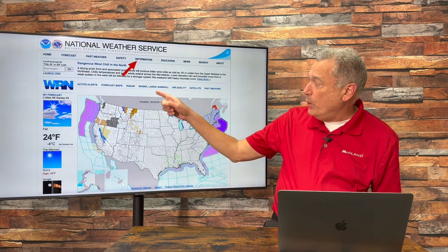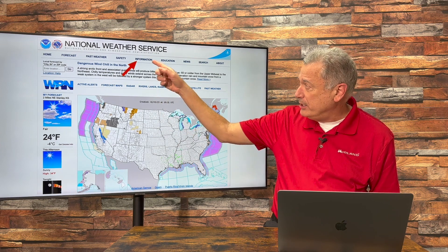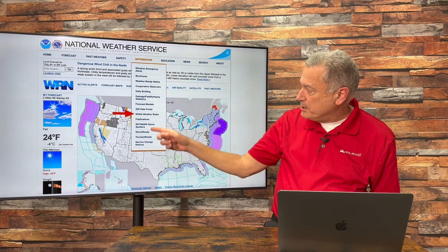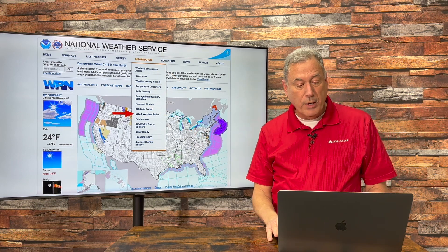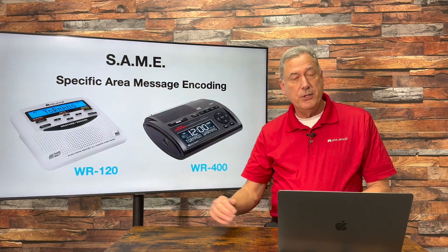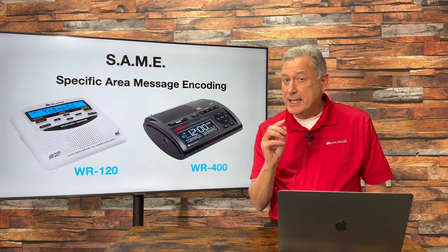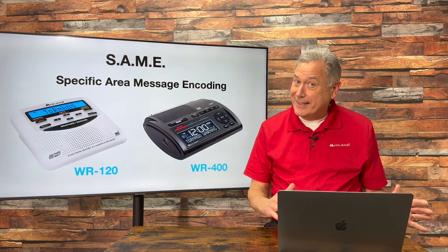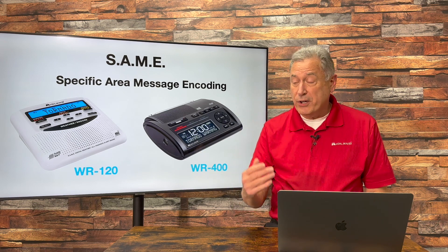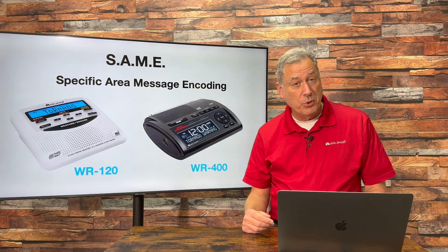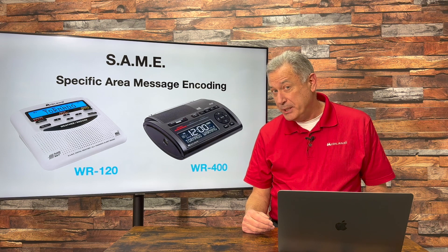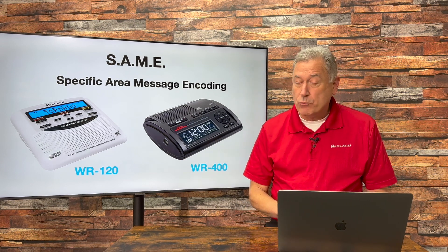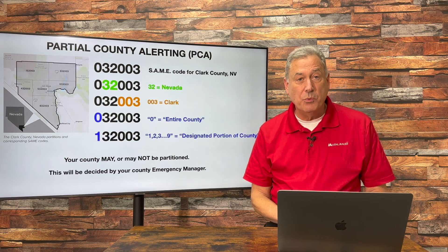All of this comes from weather.gov, the main page at National Weather Service. You click on Information, then when this menu comes down, you click on NOAA Weather Radio, and that's going to take you into the sub-menu, because the most important thing is you need to find out whether your county has been partitioned or not. If it has, watch our tutorials and I'll tell you how to program your WR120 and your WR400. If your county has not yet been partitioned, don't worry about it — everything is fine the way yours is.